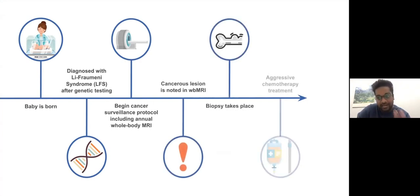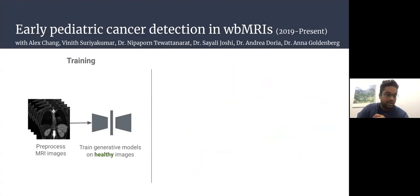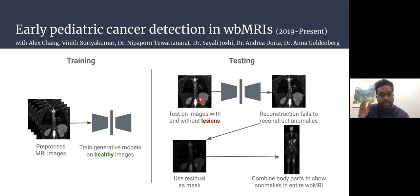If a cancer is noted in the MRI, a biopsy takes place and aggressive chemotherapy is given. Machine learning is used to make early detection easier and avoid those later steps. We trained generative models only on healthy images to learn the healthy distribution, and during testing we tested on images with and without lesions. When this healthy generative model reconstructed the image, the anomalies were not transferred over.